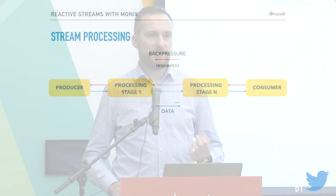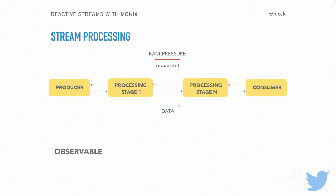Every implementation of reactive streams has its own terminology for these stages. In Monix, the producer is called an observable — the source of our data. The consumer is called, straightforwardly, a consumer. And the stages in the middle are called transformers — the blocks that actually process our data.